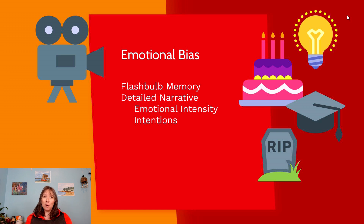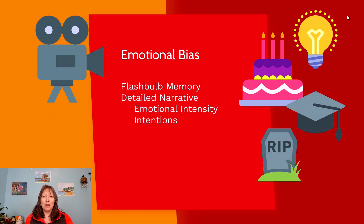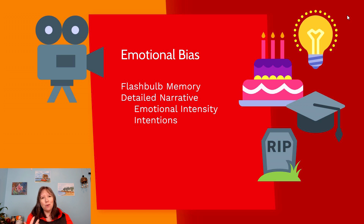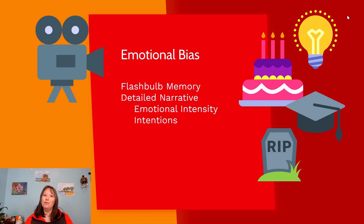What makes a flashbulb memory? These detailed narratives tend to form around something really intense — very happy, very scary, or very sad. That's why life milestones like weddings, birthdays, graduations, and big traumatic events become flashbulb memories. Beyond the event itself, our emotions shape how we remember interactions. If you had a fight with someone, whether you're feeling forgiving or frustrated will affect how you remember that argument — we have huge emotional biases in how we remember things.